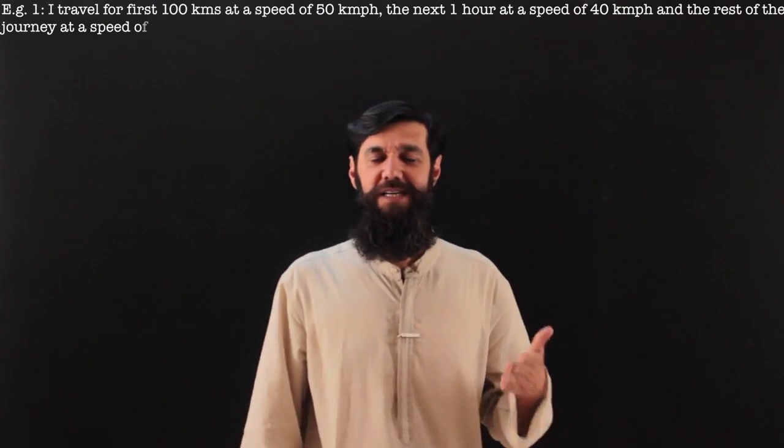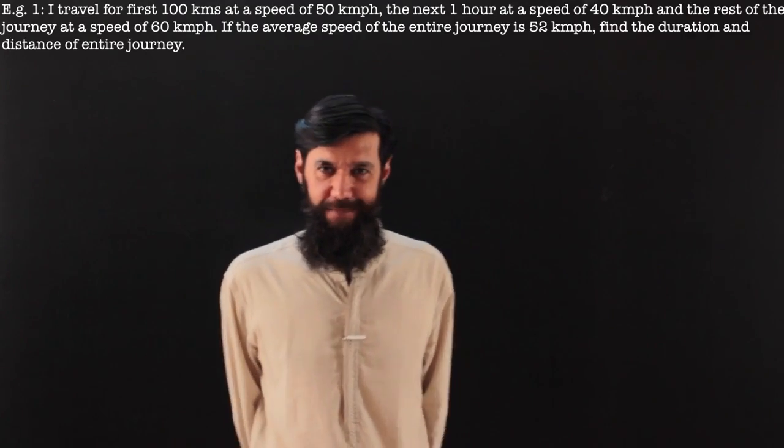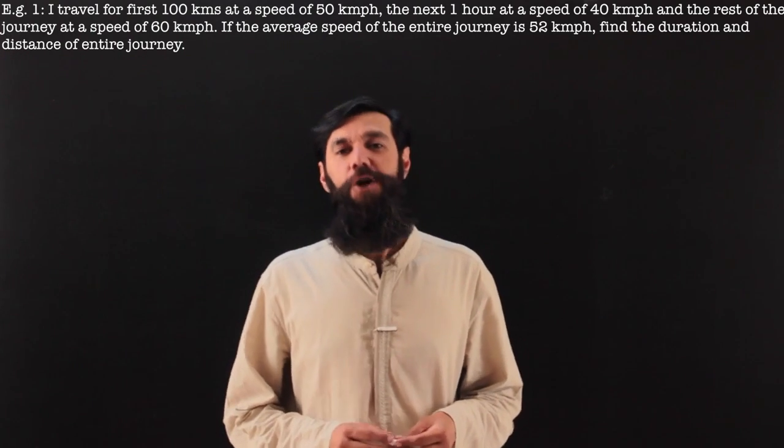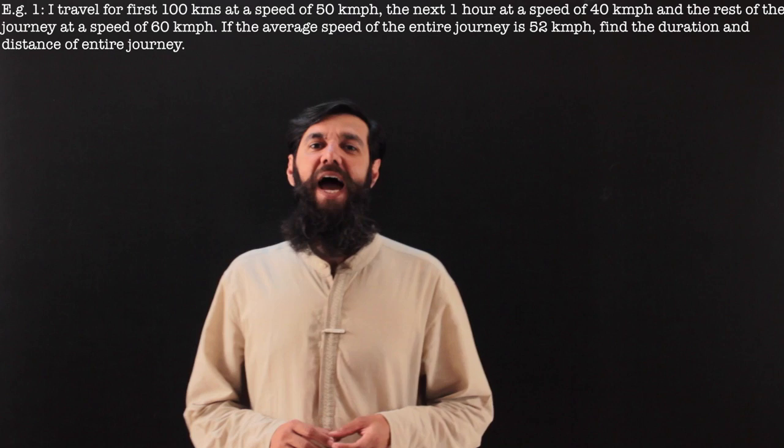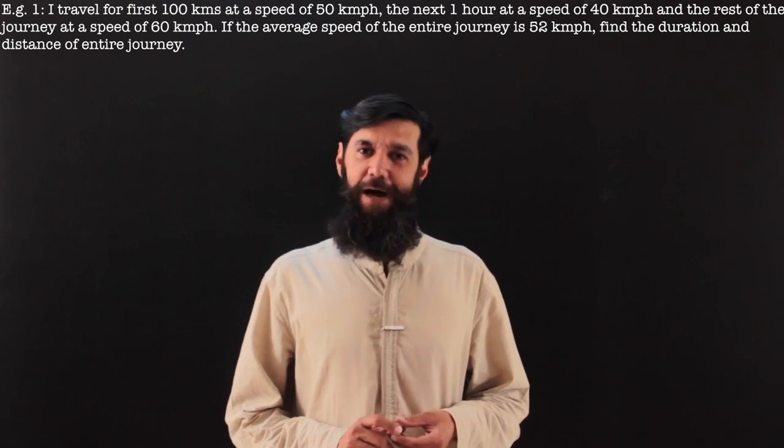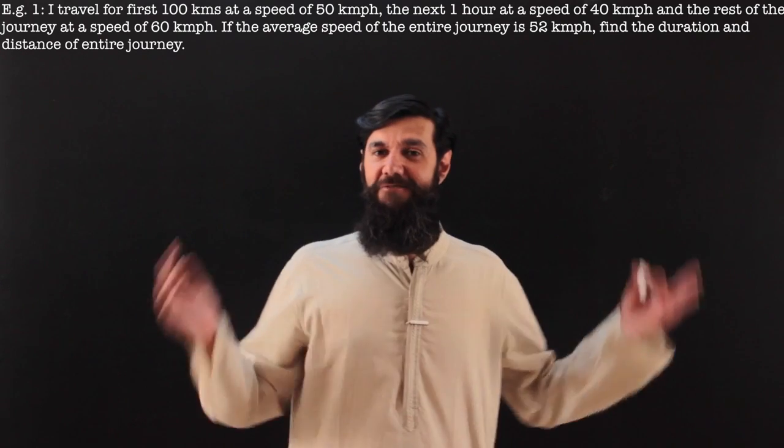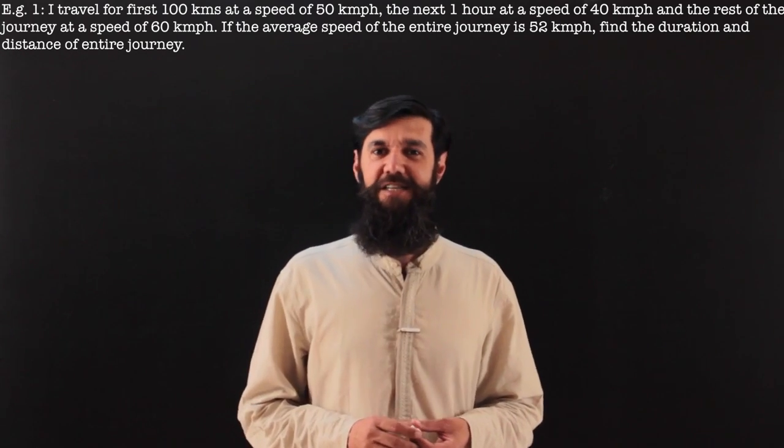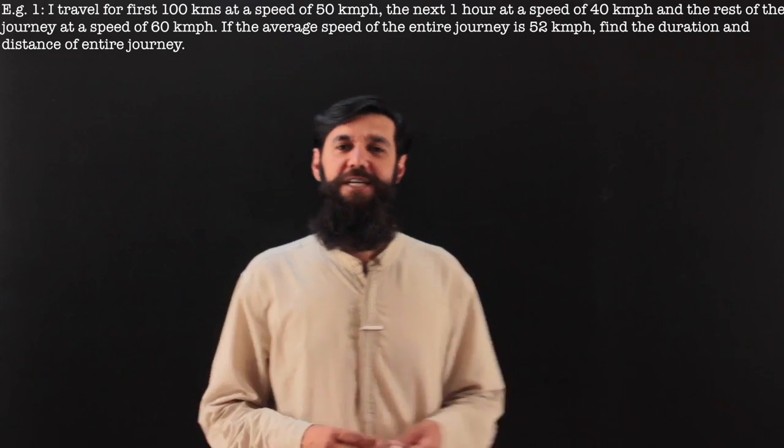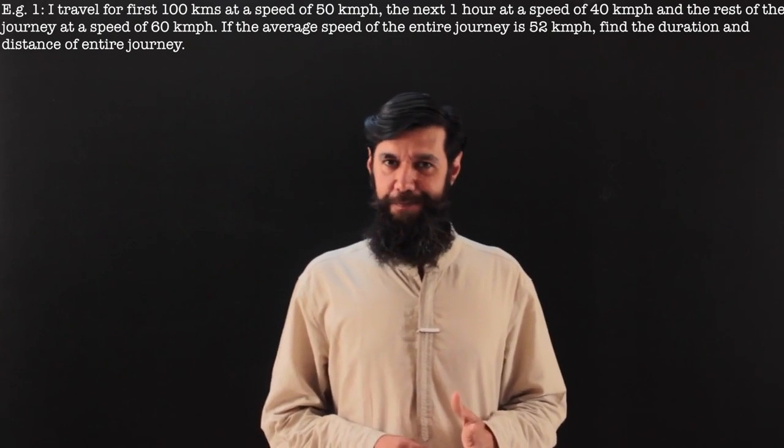An easy question. I travel for the first 100 km at a speed of 50 km per hour, for the next one hour at a speed of 40 km per hour, and the rest of the journey at a speed of 60 km per hour. If my average speed for the entire journey is 52 km per hour, find the total duration and distance of the journey.